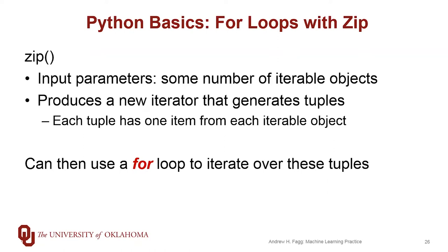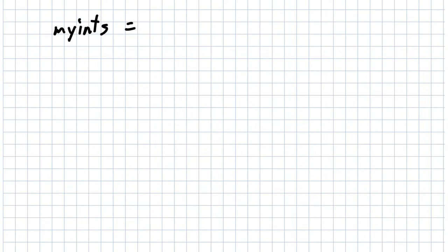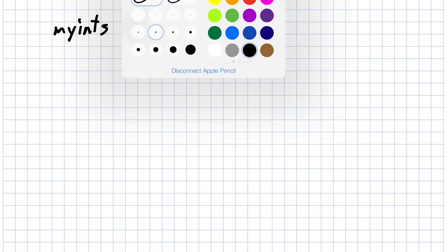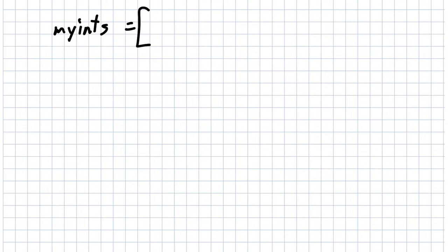Before we get into the code, let me do a quick drawing here to illustrate the idea. Imagine that I have a list of ints — my ints might contain this set of integers — and I might have some set of strings.